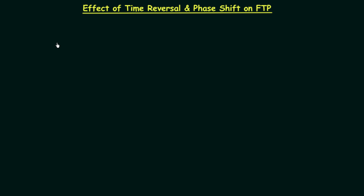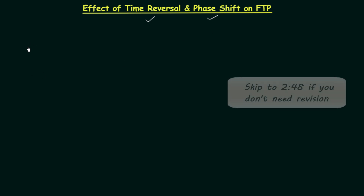In the previous lecture we saw the effect of time shifting and time scaling on the fundamental time period of a signal. Now in this lecture we will check if there is an effect of time reversal and phase shift on the fundamental time period. So we have two operations: time reversal and phase shift. We will perform them in two different examples and check if the fundamental time period (FTP) is the same or not. But before that we will quickly revise what we have learned till now.